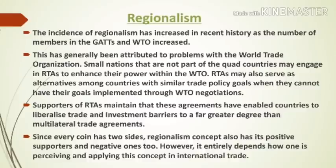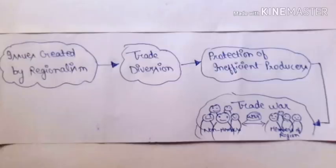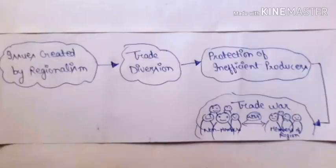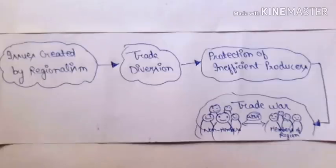Now we will talk about the issues created by regionalism in world trade. There are three major issues: the first is trade diversion; the second is protection of inefficient producers; and the third is trade war. A diagram is on your screen — you can draw this diagram in your exam if this concept appears. Please take a screenshot.